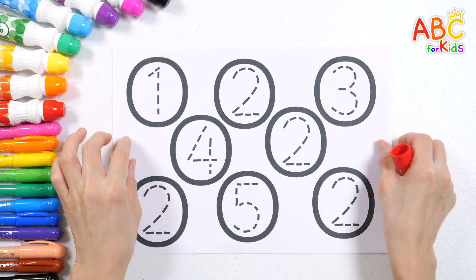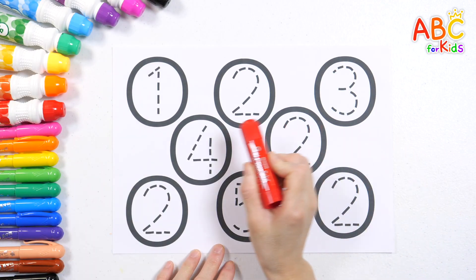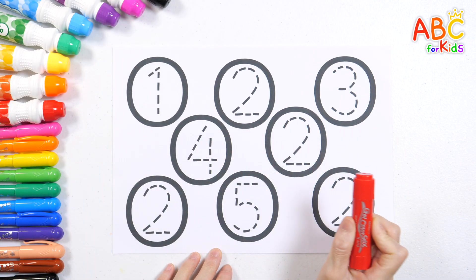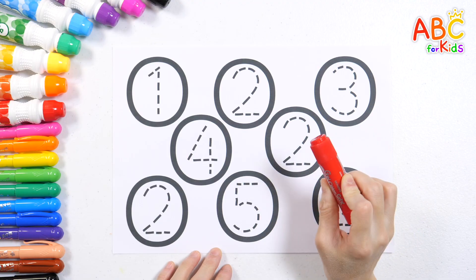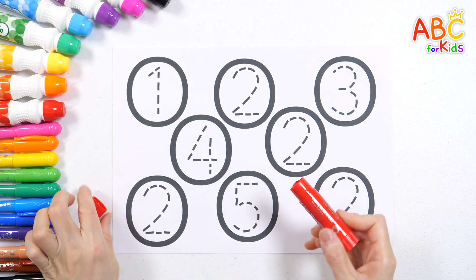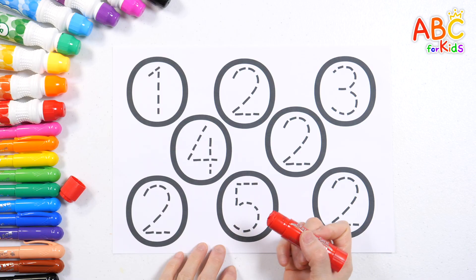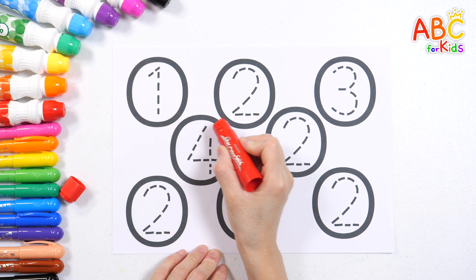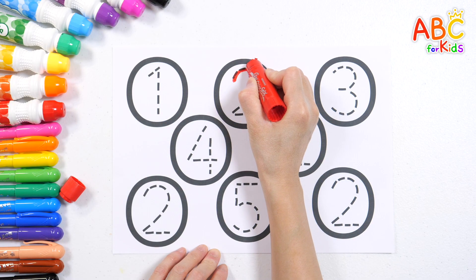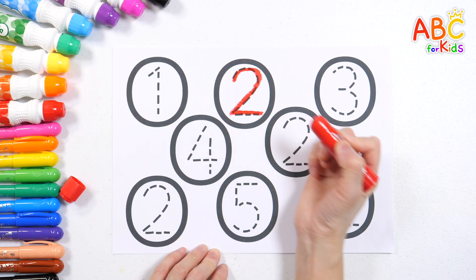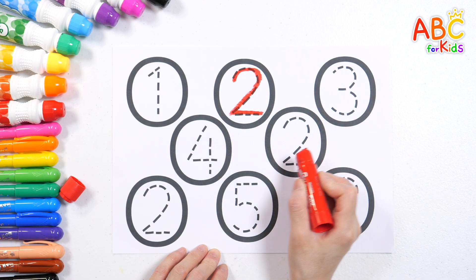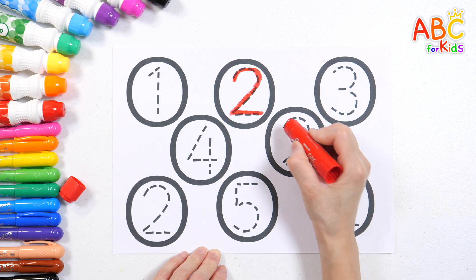There are lots of numbers here! Can you find number two and trace along the dotted line? One, two, three, four! Found it! Five, six, two, seven, eight, nine, ten! Here it is!